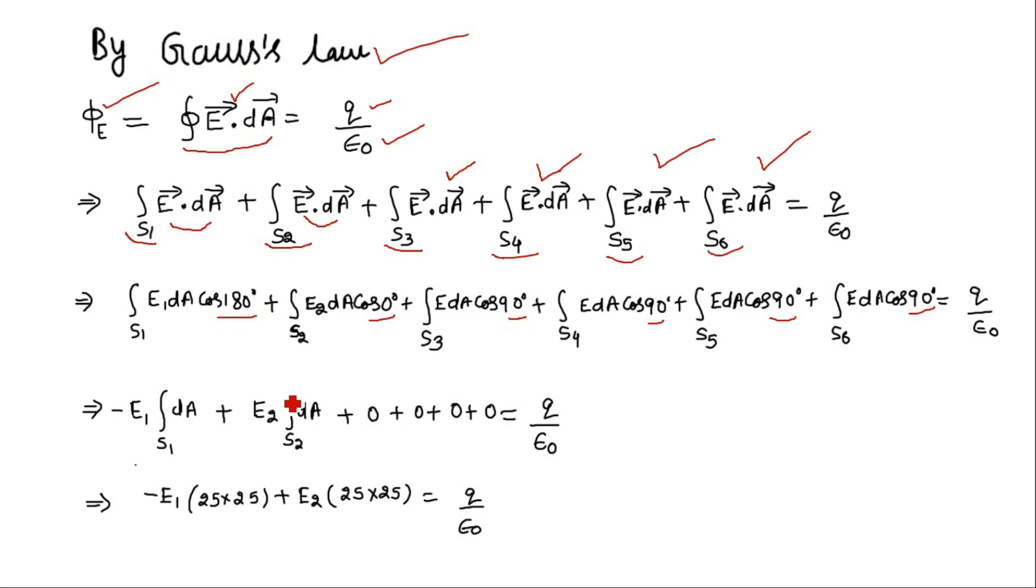Similarly the value of cos 0 degrees is 1, and we take E2 outside the integration because magnitude of electric field at the second face defined by the surface S2 is again a constant quantity. Since cos 90 degrees is 0, these four contributions will add up to 0.